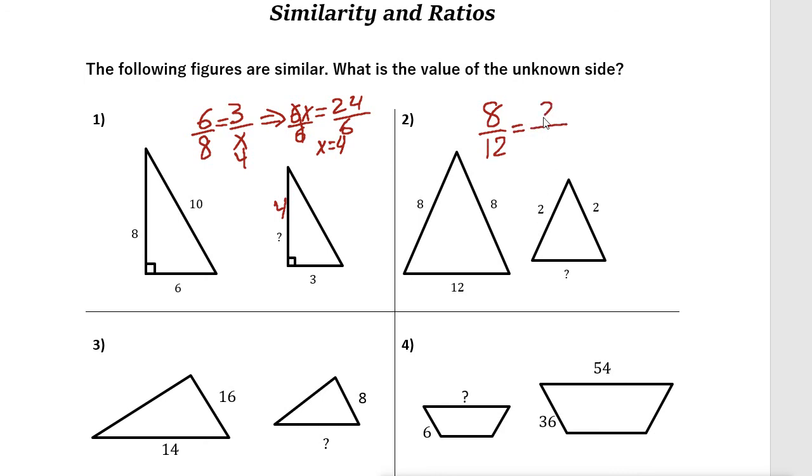We say that 8 over 12 is the same as 2 over X. Now if you notice, 2 times 4 is 8, so something times 4 should be 12, so X is 3. We can also use cross multiplication: X times 8, 8X equals 2 times 12, that is 24. Divide both sides by 8, and these cancel out. 24 divided by 8 is 3, so this side is 3.